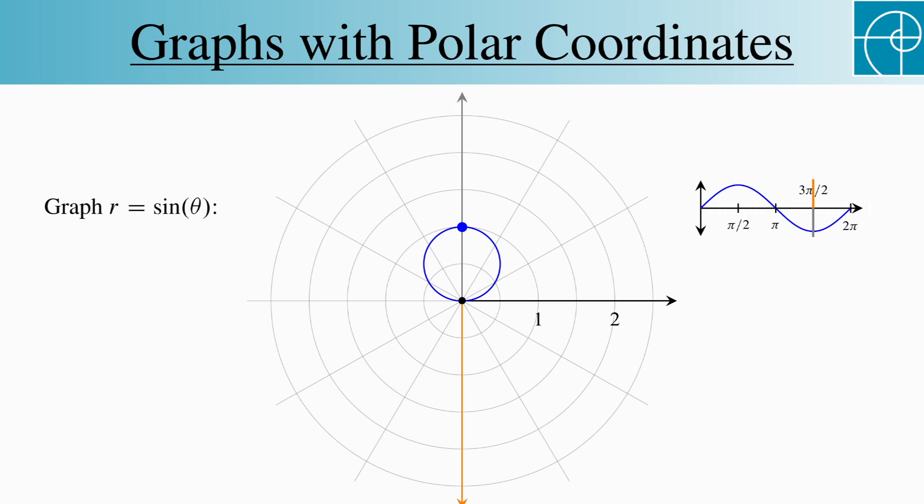Now we've reached theta equals 3pi over 2, and as we continue to 2pi, we once again return to the origin.